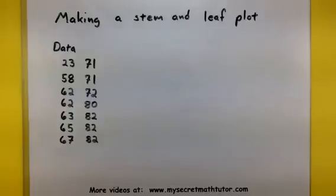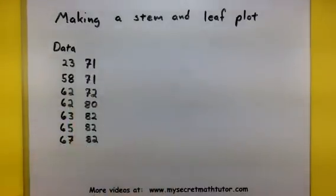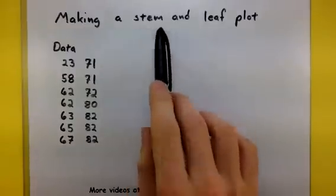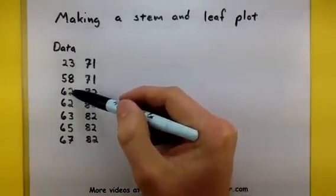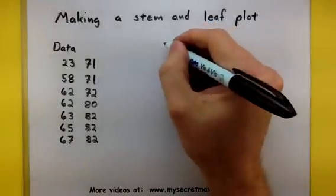The idea with making a stem and leaf plot is we are going to identify the leading values in all of these numbers, and that will become our stem. And then with the other values in the number, those will become the leaves. Alright, so let's see how this works out by first creating the stems.